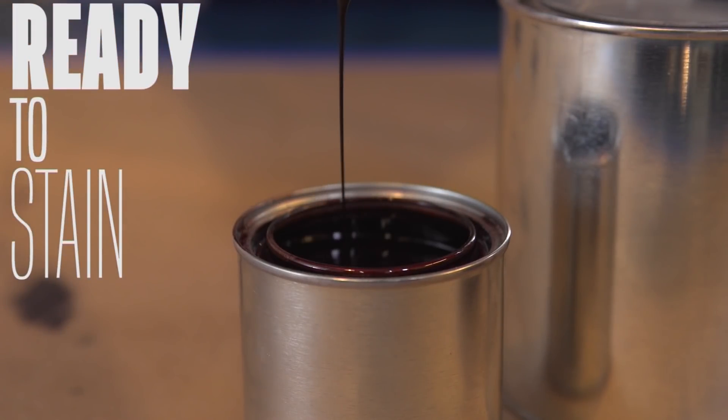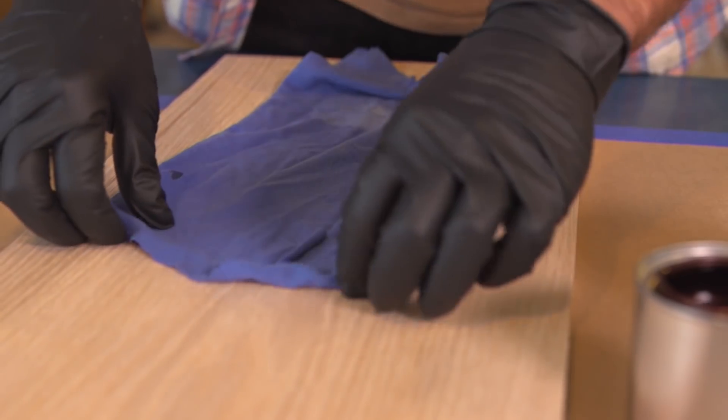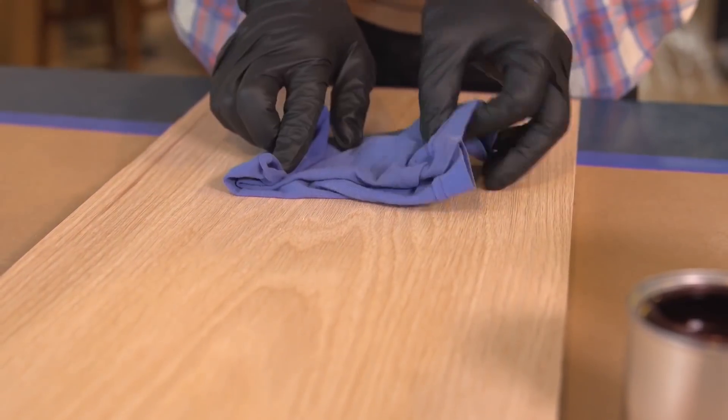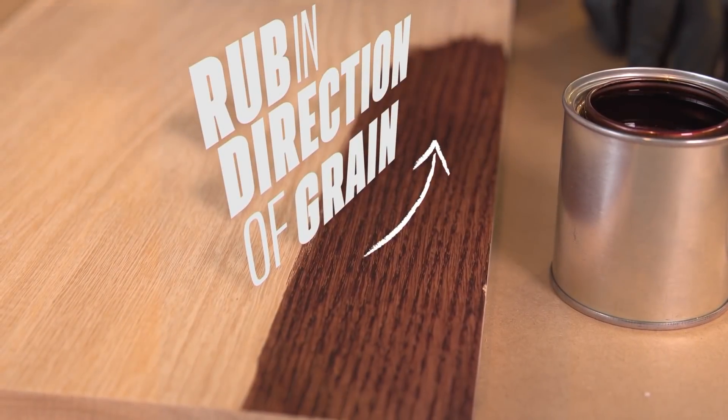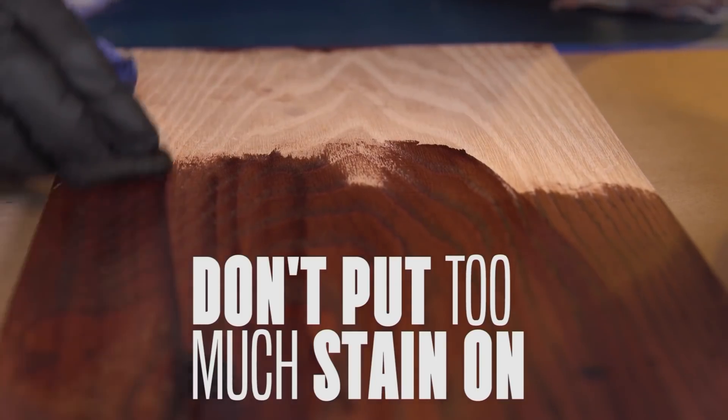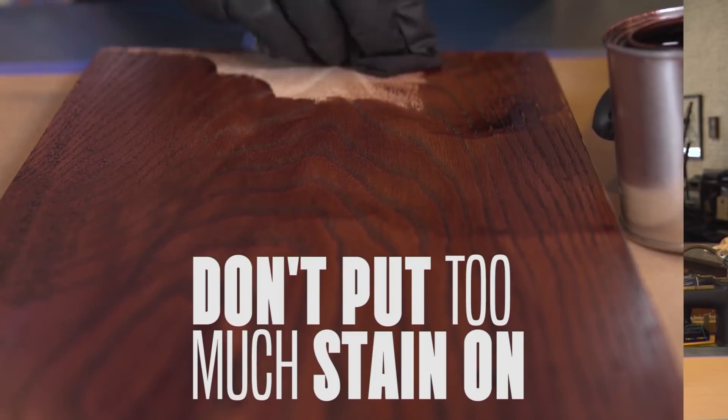Now I'm ready to begin staining. Fold your rag so the edges are on the inside. That's going to keep little fuzzies out of your finish layers. I'm going to rub in the direction of the grain. What I'm not doing is putting way too much on and sloshing it all around everywhere.